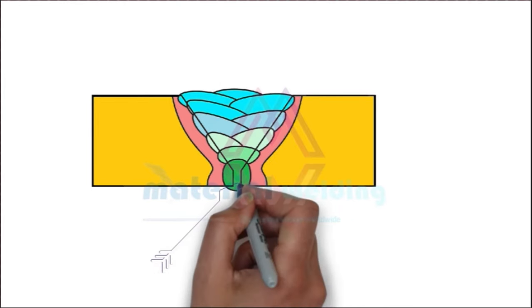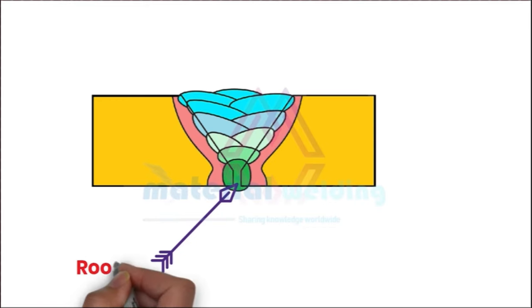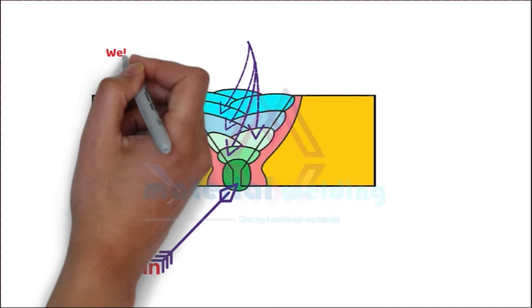Next, the first run deposited in a groove weld is called a root run. Each weld pass welded is called a weld bead or weld pass.